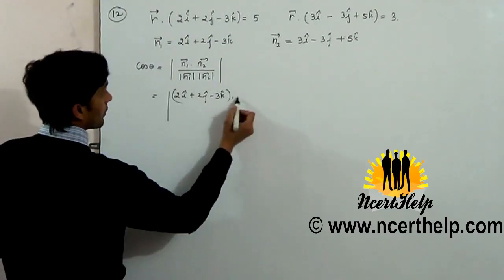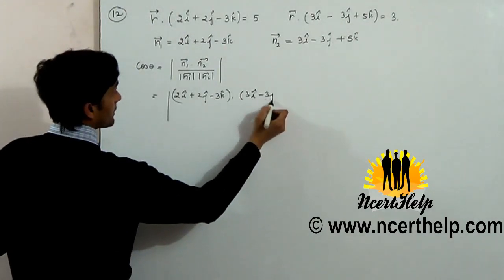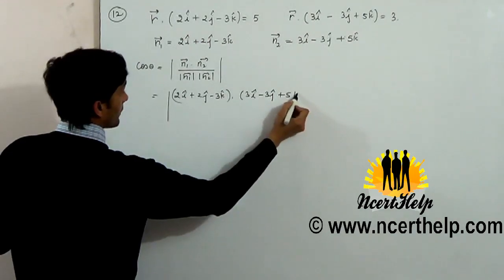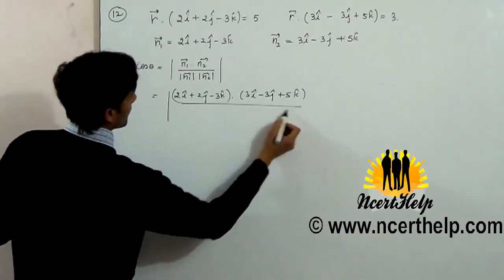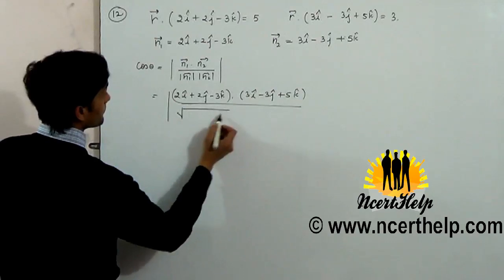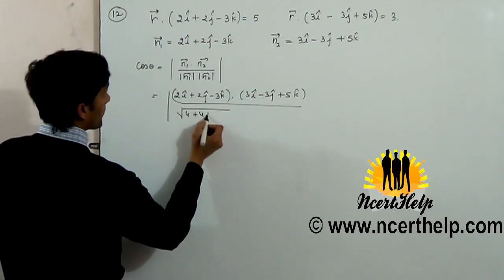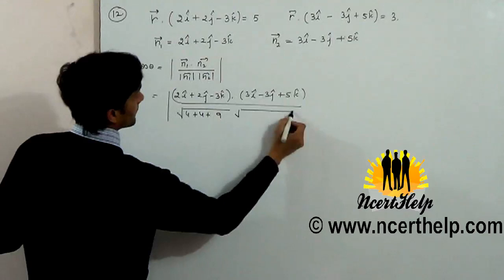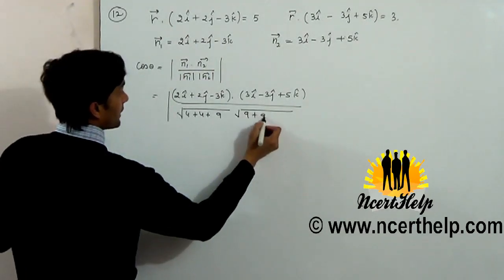Magnitude of n1 vector: root of 4 plus 4 plus 9. Magnitude of n2: root of 9 plus 9 plus 25.